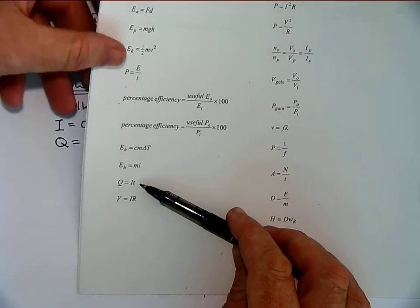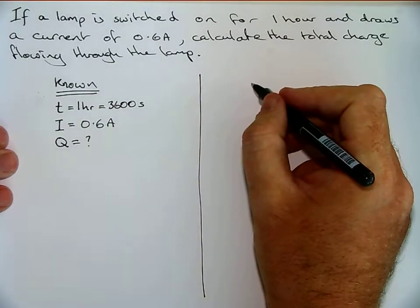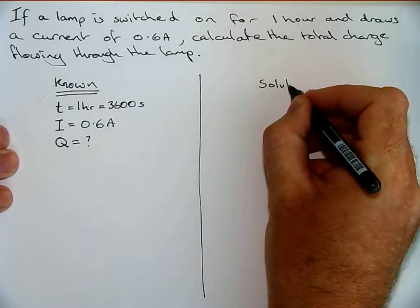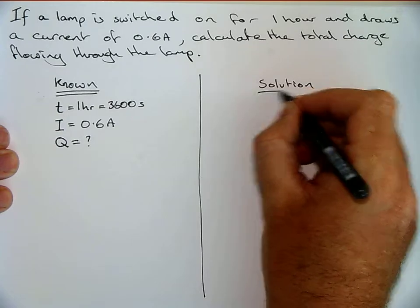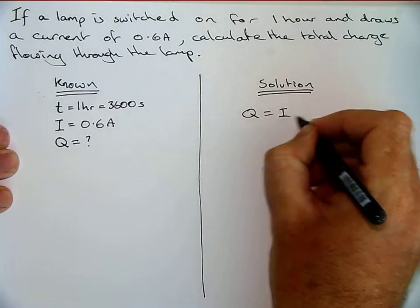So we write down the equation exactly as it is, Q equals I T. We'll do that over this side, so this is where our solution will appear. Q equals I T.